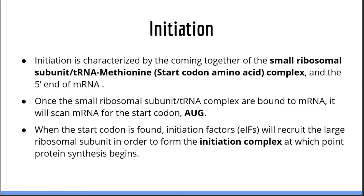Initiation is characterized by the coming together of the small ribosomal subunit tRNA-methionine complex and the 5' end of a mature mRNA molecule. Normally, tRNA-methionine is always bound to the small ribosomal subunit to form the small ribosomal subunit tRNA complex. This complex is always searching for the 5' end of an mRNA molecule. Once found, it binds the 5' cap and scans for the start codon AUG. Once the start codon has been found, initiation factors recruit the large ribosomal subunit to form the initiation complex, and protein synthesis will begin.